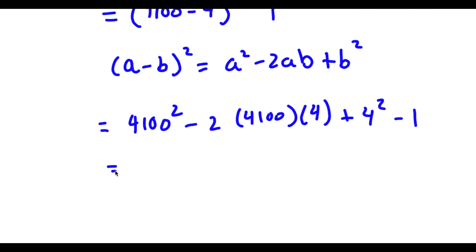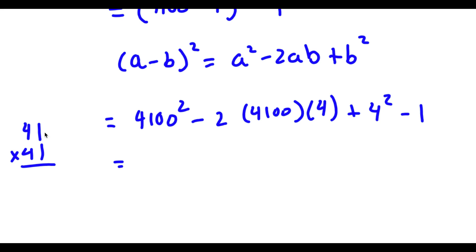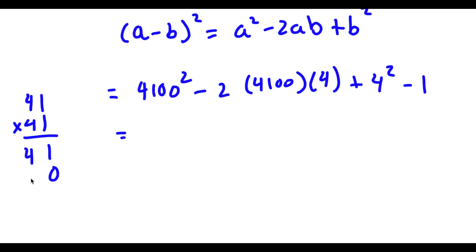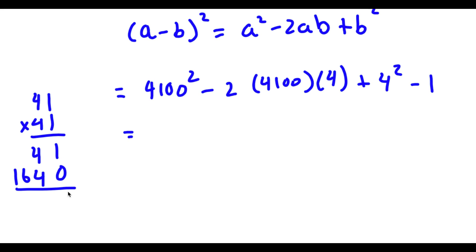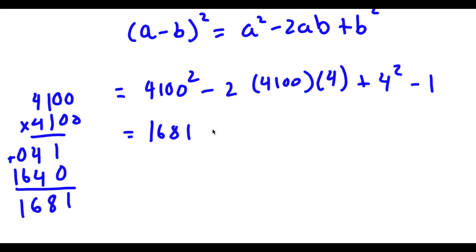Now to simplify 4100 squared: if we ignore the zeros, we have 41 squared. 41 times 41 gives us 1681, and then we add four zeros because we're multiplying 4100 times 4100. So I have 16,810,000. Then minus 2 times 4100 is 8200, and 8200 times 4 is 32,800. Now I have this plus 16 minus 1.